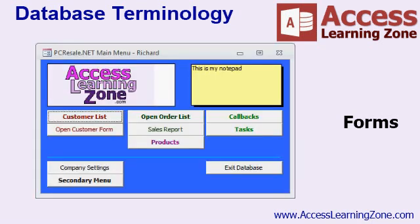Your forms can also contain drop-down lists, so users can select data. Command buttons allow us to perform tasks such as opening other forms or finding records. In fact, you can turn a form into a main menu for other forms. The benefits of working with forms go on and on, but essentially you'll build the interface with which users will work with your data out of forms. You never want users to have to work directly with your tables and queries, and you'll see why in upcoming classes.